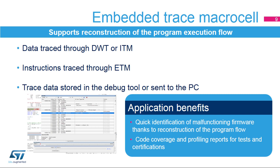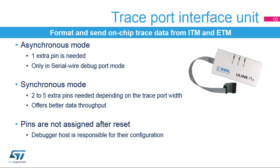ETM is very useful to quickly identify bugs and also generate code coverage and profiling reports, which are used for test purposes and certifications. The trace port interface unit formats information from the on-chip trace units, ITM and ETM, and sends them to the debugger host. It supports asynchronous mode with one pin used for communication in single-wire mode, or synchronous mode with up to five pins working in both JTAG and single-wire modes.